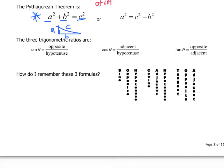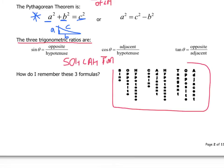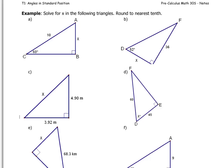We may also recall the three trigonometric ratios, given by the classic SOH-CAH-TOA. The sine of any angle is its opposite divided by its hypotenuse. The cosine is the adjacent over the hypotenuse. And the tangent of any angle is the opposite side divided by the adjacent. We've written a little chart here to remember that by.